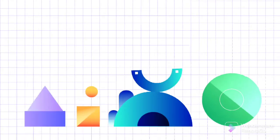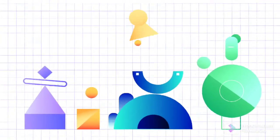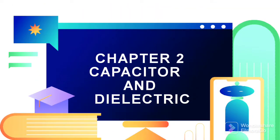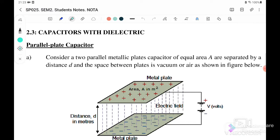Hello, welcome back to my channel. Today we will continue with Chapter 2: Capacitor and Dielectric. For this video we will discuss section 2.3, Capacitance with Dielectric. A parallel plate capacitor consists of two parallel metallic plates of equal area separated by a distance d, and the space between the plates is vacuum or air, as shown in the figure below.